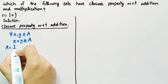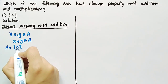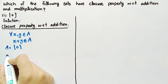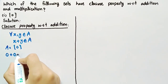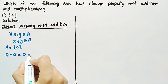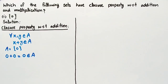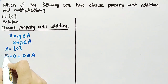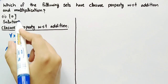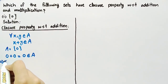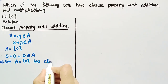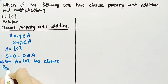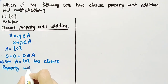Now let's name the given set as A, so we can write A = {0}. Since there is just one element in the given set, to check the closure property with respect to addition we will add zero plus zero, which is equal to zero. We can clearly see that zero belongs to set A. After adding the elements of A, the answer also belongs to set A, so we can say that the closure property with respect to addition holds for this set.